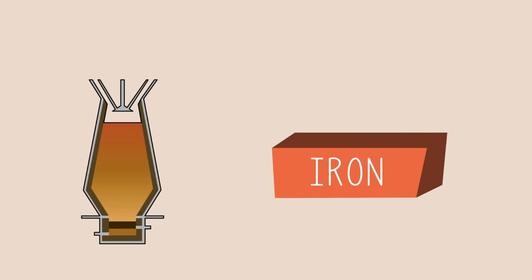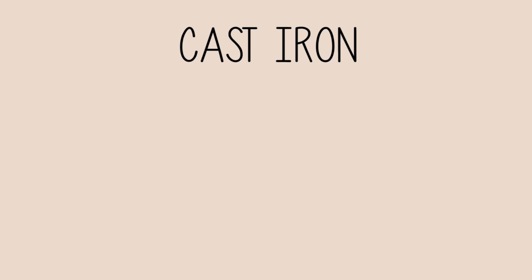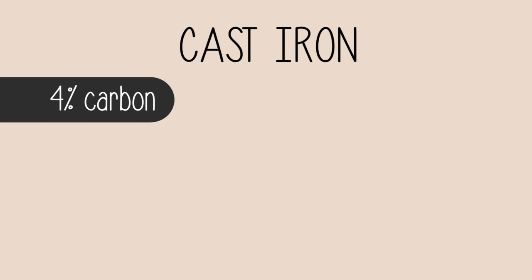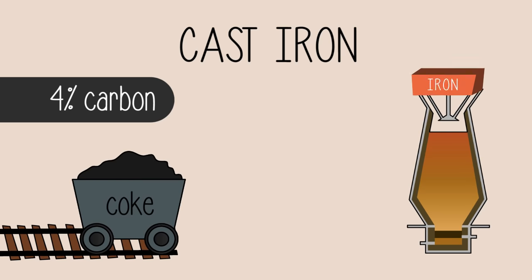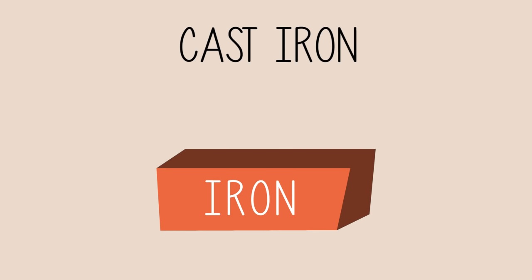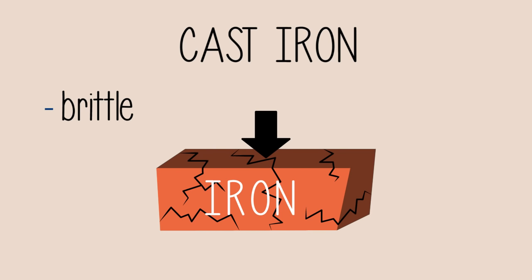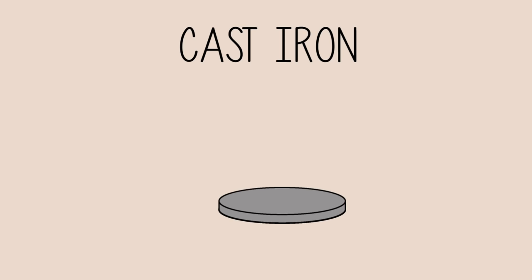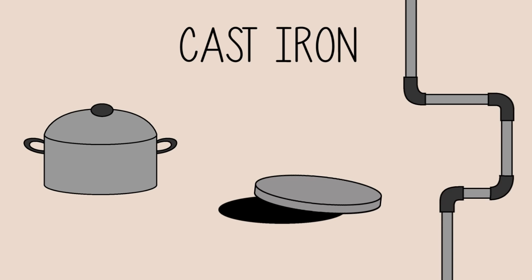The iron that is first obtained from the blast furnace is known as cast iron or pig iron. Cast iron contains about 4% carbon, which comes from coke used in the extraction process from hematite in the blast furnace. This cast iron is brittle, which means that it breaks instead of forming many different shapes when a force is applied. Cast iron is used to make manholes in roads, certain types of cookware, and some piping materials.